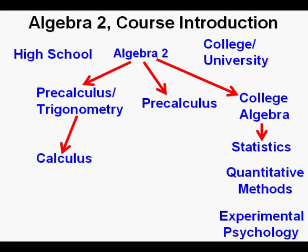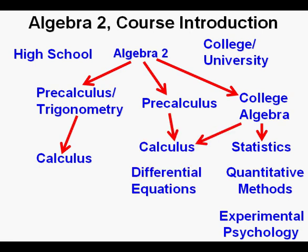From college algebra, there are a couple different ways to go. You could go to the business or social sciences math track of statistics, quantitative methods, and possibly on to experimental psychology. Or you could go on to the technical sciences or engineering track by going to calculus and differential equations, and on to yet higher math applications. The crucial point here is to notice that Algebra 2 is a crucial building block no matter which way you go in your future education.